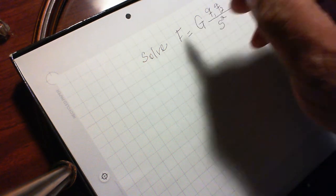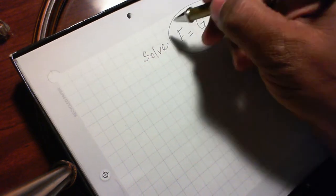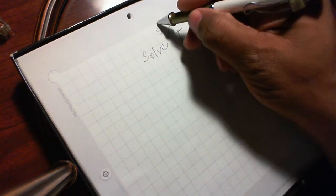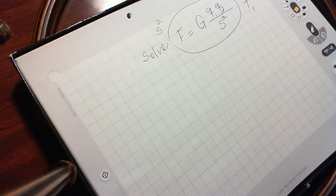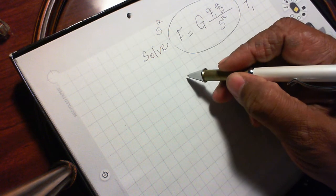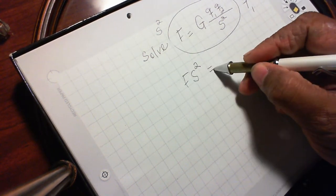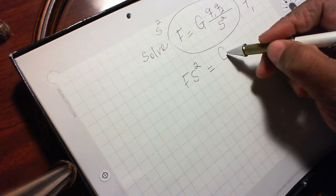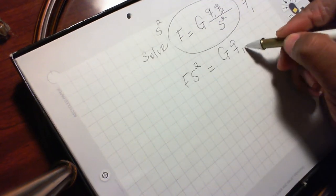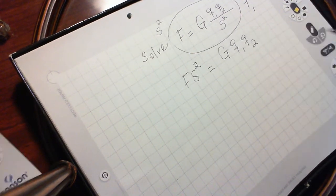I have multiplied the whole thing here by s squared. It doesn't change anything, it's just multiplying. So if I do that, what do I get? I get F s squared is equal to G q1, q2.